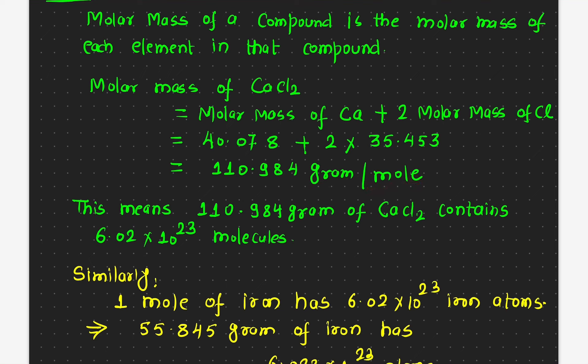That means 110.98 grams of calcium chloride means one mole. Or if I take one mole of calcium chloride, then the mass of this one would be 110.98 grams.